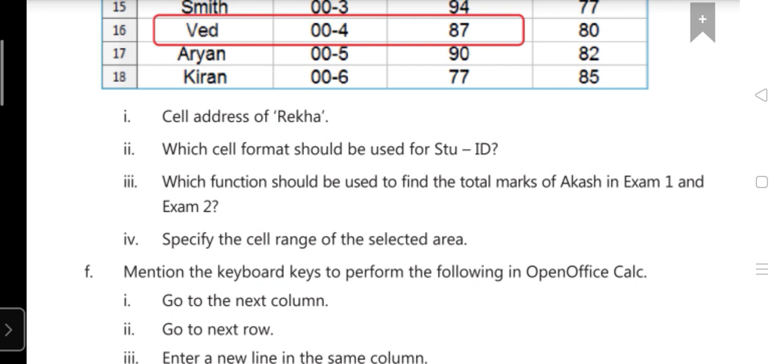Now third: which function should be used to find the total marks of Rekha in exam 1 and 2? We know that for the total we are using the function sum. So you have to write down the answer: equals to sum, in a bracket C13 semicolon D13.